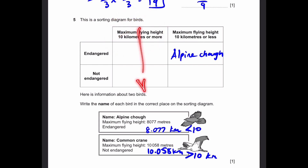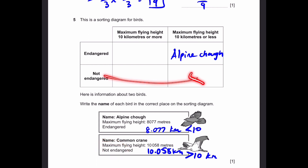Now it's not endangered as well, so it's in this row. The intersection will be over here. So you write 'common crane' in that box, and that will be our answer.